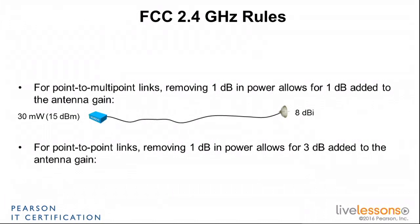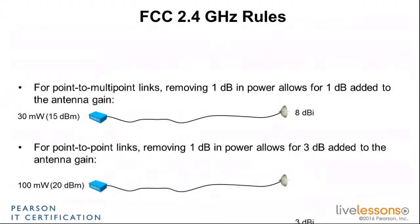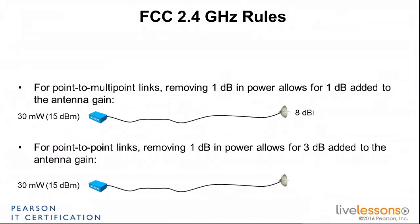So that's very different. If you have the same system — 20 dBm on one side and a 3 dBi antenna — but this time designed for point-to-point, and you again remove the same 5 dB at the access point level, instead of gaining just 5 dB on the other side, for each dB you remove you can gain 3 dB. By removing 5 dB, you can add 15 dB, resulting in an 18 dBi antenna gain. So depending on where you design your system and what you design it for, the rules can be very different.